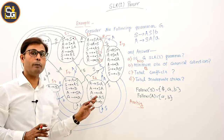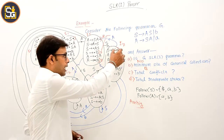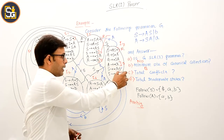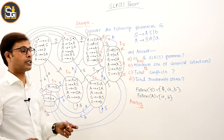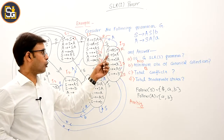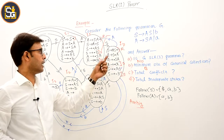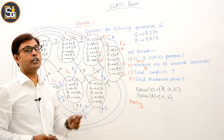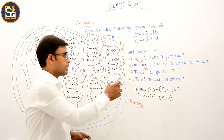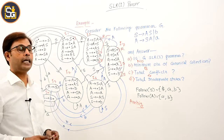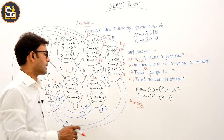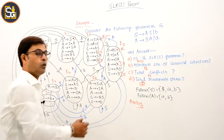In I6, there is no reduce item, so nothing comes from there. In I7, there is a reduce entry. Checking shifts: if FOLLOW(S) contains A, that is a shift-reduce conflict; if FOLLOW(S) contains B, that is another shift-reduce conflict. So I7 also gives two shift-reduce conflicts. Total conflicts: 4 SR conflicts, 0 RR conflicts. Total inadequate states: I5 and I7, that is 2.